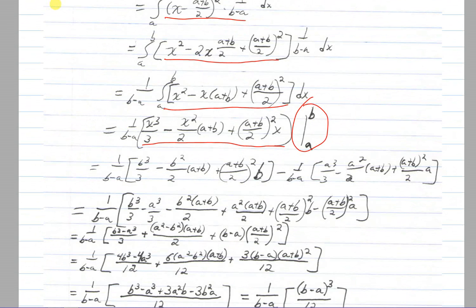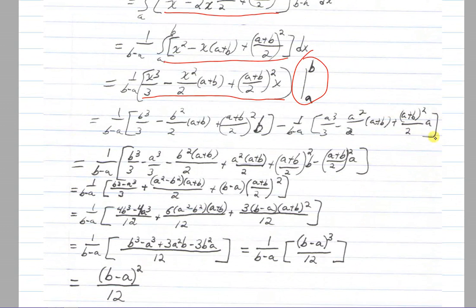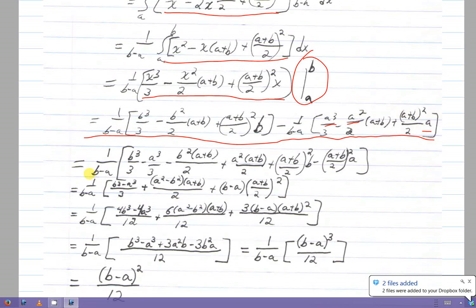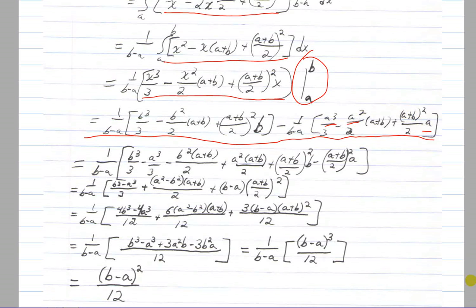Let me zoom out a little bit so you can see this. When we evaluate it, over in this section we're plugging in b's everywhere for x, and then subtracting what we get when we plug in a's everywhere for x. Then over these next few lines, all I'm doing is simplifying and collecting terms. And in the very end — you can go through this yourself if you don't trust me; it's a bit of a painful algebraic process — what you'll end up with is (b minus a) squared over 12 as the variance of a uniform distribution.